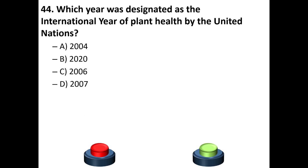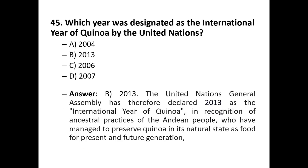Forty-fourth question: which year was designated as International Year of Plant Health by the United Nations? 2004, 2020, 2006, or 2007? Answer is 2020. Forty-fifth question: which year was designated as International Year of Quinoa by the United Nations? 2004, 2013, 2006, or 2007? Your answer is B — 2013.